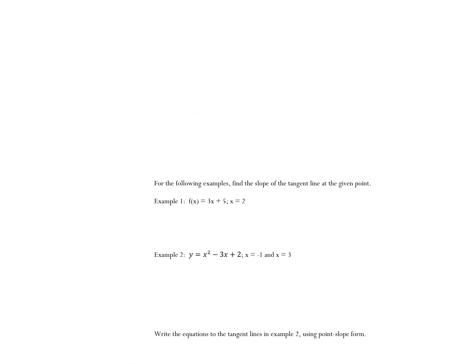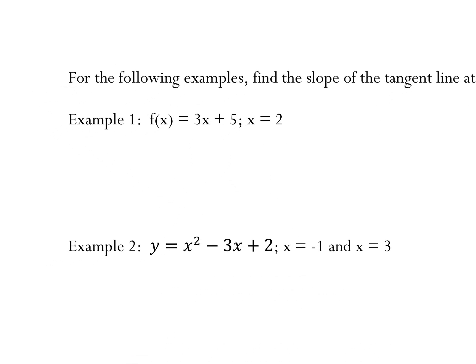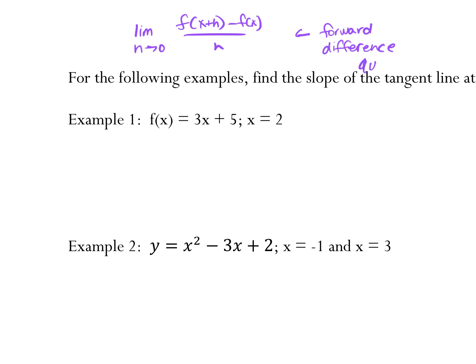So let's look at an example. This equation that we had to find the slope of the tangent line — we call this the forward difference quotient. The way it'll be worded on a test or whatever is: use the forward difference quotient to find the derivative, and I will give you that equation. You don't need to memorize it. I'll give it to you on the quizzes and tests.